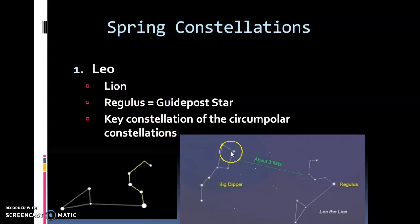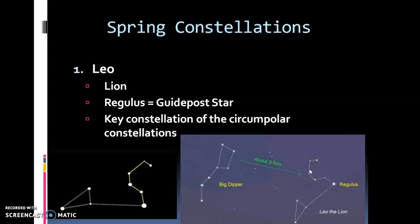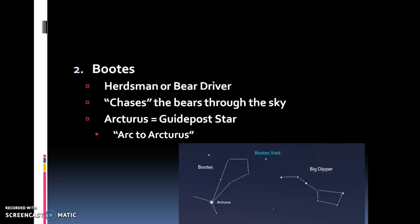Another way to find Leo is if you know where the Big Dipper is. Hold your fist out at arm's length — everyone's arms are different lengths and fists are different sizes, but it works pretty well for most people. Put about three fists in between and you should be right in the vicinity of that sickle.